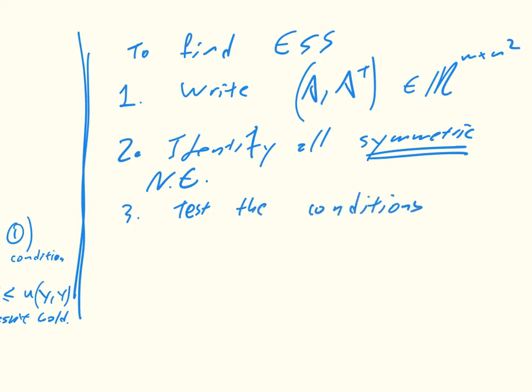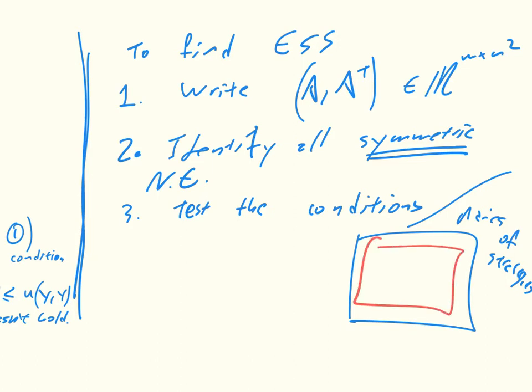we're going to test the conditions. So in essence, the idea is that we've got our strategies, our pairs of strategies. And we have these pairs of strategies, and within these pairs of strategies, we've got our Nash equilibria. Within the Nash equilibria, we've got our symmetric Nash equilibria, so where both players have to do the same thing. And within those symmetric Nash equilibria, we've then got ESS. And the way we're going to check ESS is we're going to check those conditions.